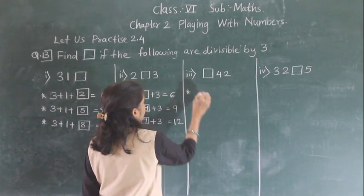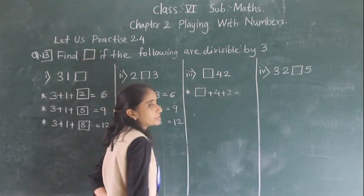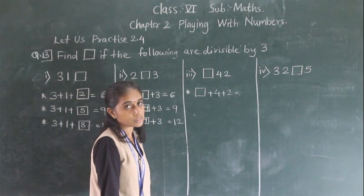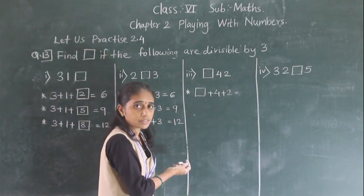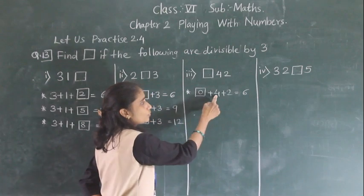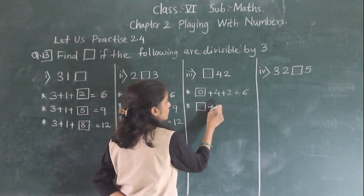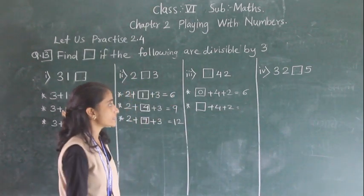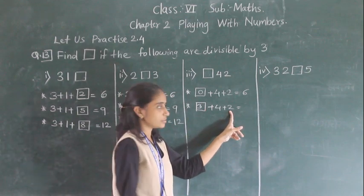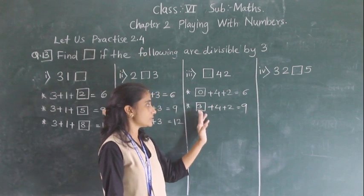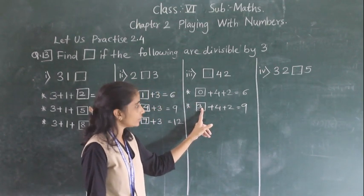Now next: in the place of box, which number will we write? 4 plus 2 is 6. 6 is divisible by 3, so here we can write 0. 4 plus 2 is 6, 6 plus 0 is 6 — still divisible by 3. Next, 6 plus 3 is 9 — also divisible by 3. So here we can write 3.